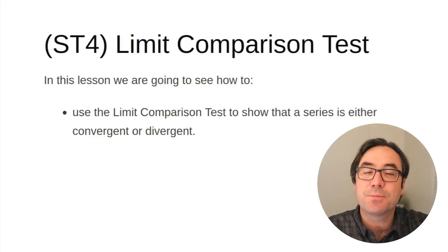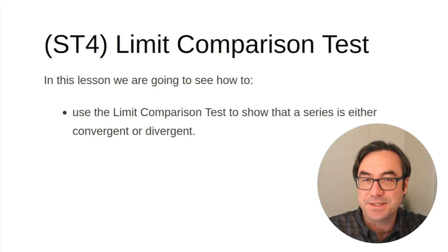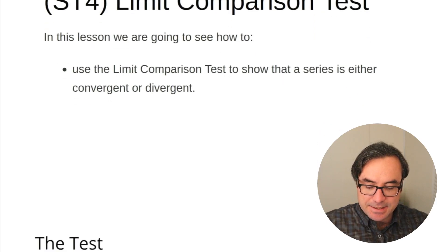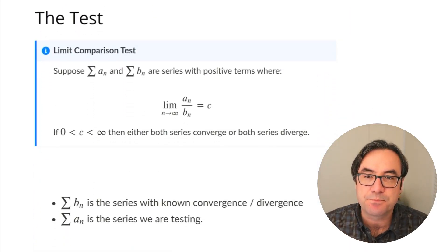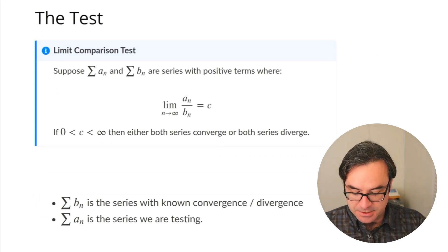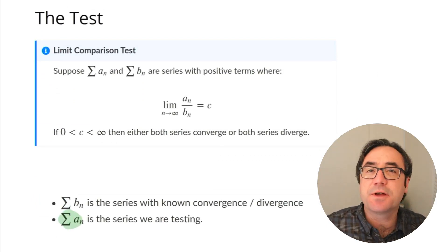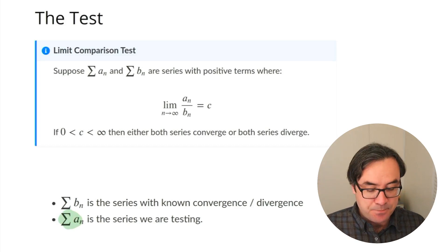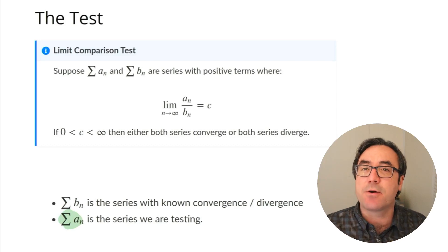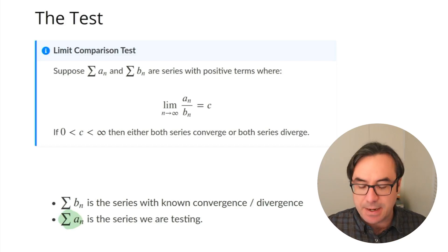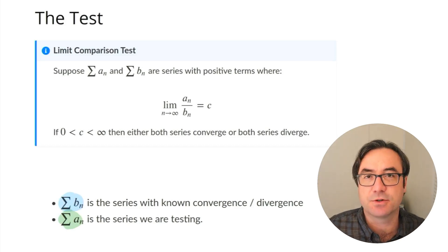Welcome everyone. For today's prep, we're going to look at the limit comparison test, and we're going to see how we can use this to tell when a series is convergent or divergent. As the name suggests, we're going to have a series, sigma an, that we don't know anything about — we don't know if it converges or diverges. The idea behind this test is we're going to compare it to another series which we do know something about, so we'll have a second series to consider as well.